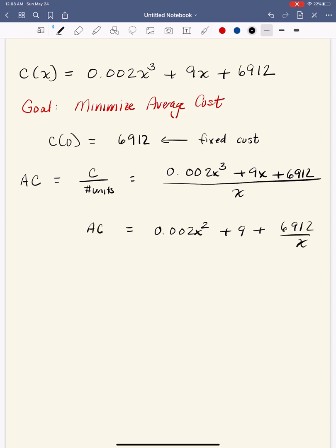Again, that is what I'm calling AC or AC of X, you could call it. Some other places call it C bar of X. I'm just trying to keep the notation right here. Now, since minimizing requires us to use derivatives,